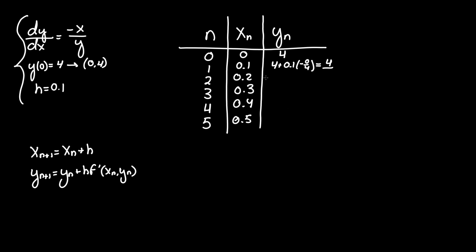Following the same trend, we start off with four once more. It's the previous value of y of n, which is now n equals one, so y of n equals four plus the same step size 0.1 times now f prime of x of one comma y of one.